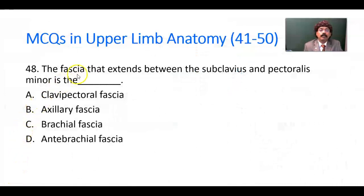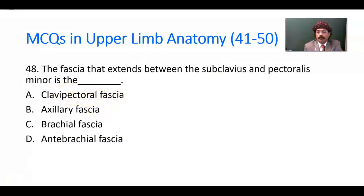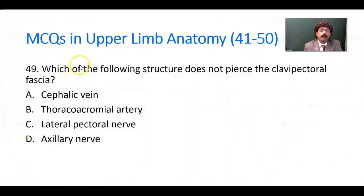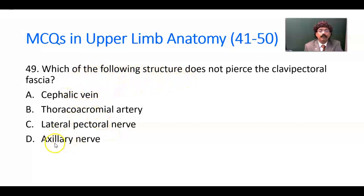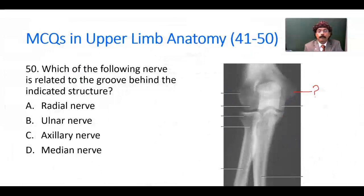Question number 48. The fascia that extends between the subclavius and pectoralis minor is the clavipectoral fascia. Options: clavipectoral fascia, axillary fascia, brachial fascia, antebrachial fascia. Answer: clavipectoral fascia. Question number 49: Which of the following structures does not pierce the clavipectoral fascia? The clavipectoral fascia is pierced by the cephalic vein, thoracoacromial artery, lateral pectoral nerve, and lymphatic vessels — but not by the axillary nerve. The answer is the axillary nerve.